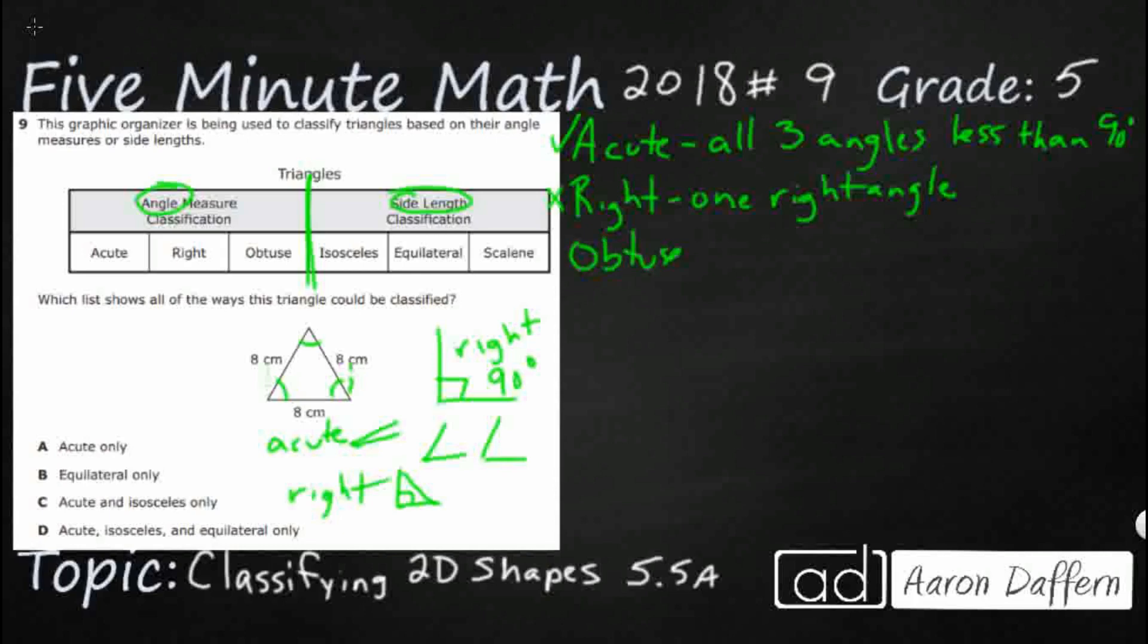Obtuse triangles have one—you can't have more than one. You can't have more than one right angle. You can't have more than one obtuse angle. Obtuse angles are greater than 90 degrees. So right angles are exactly 90 and obtuse are just kind of big fat angles kind of like this.